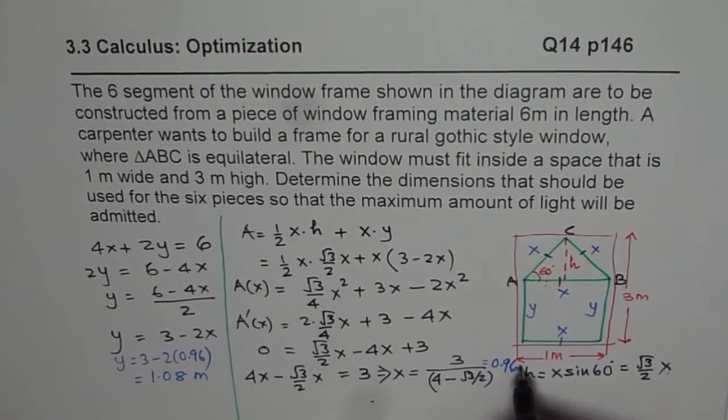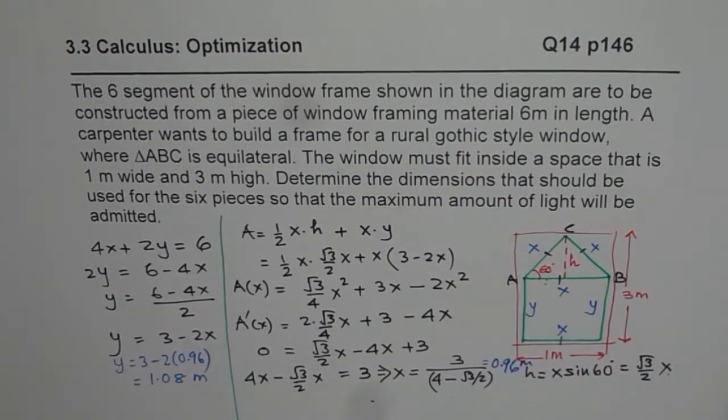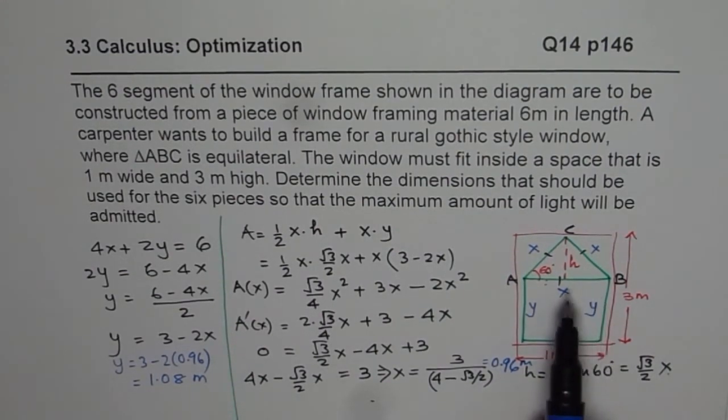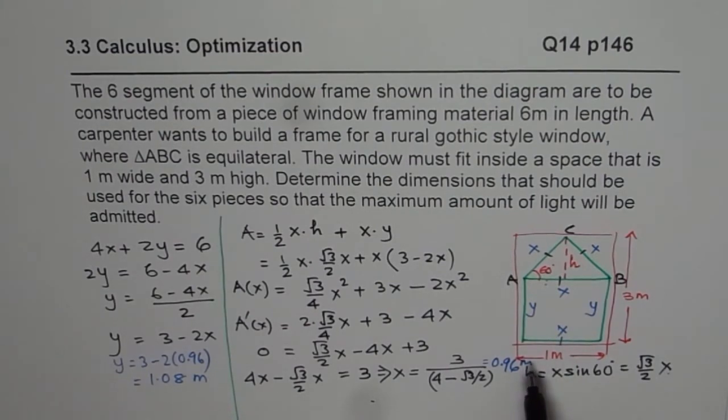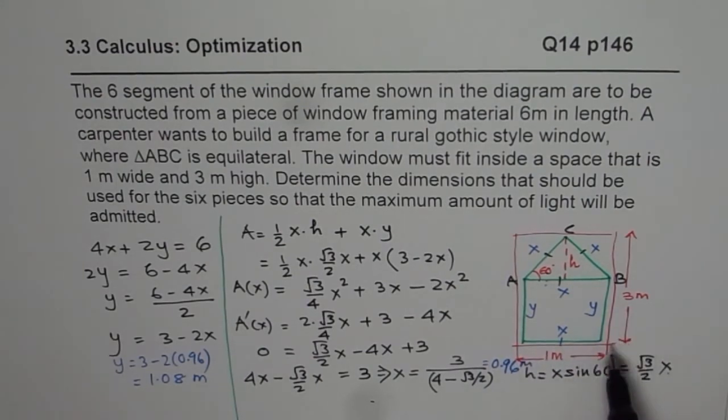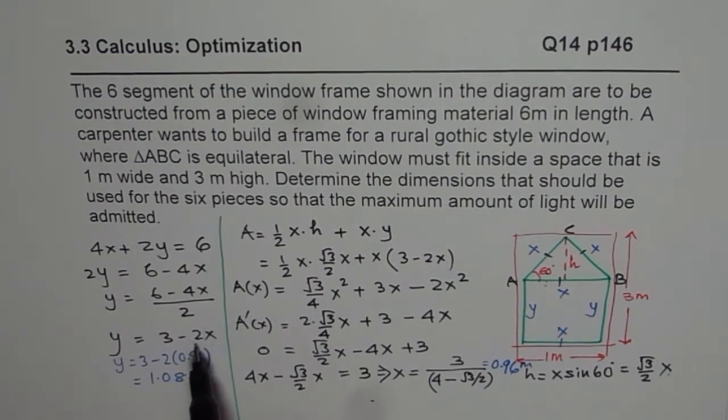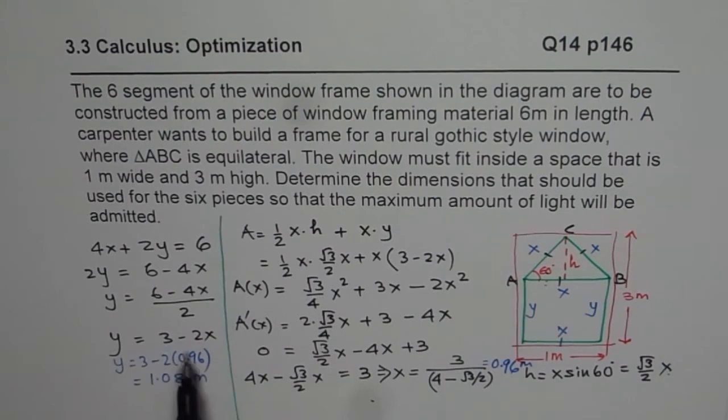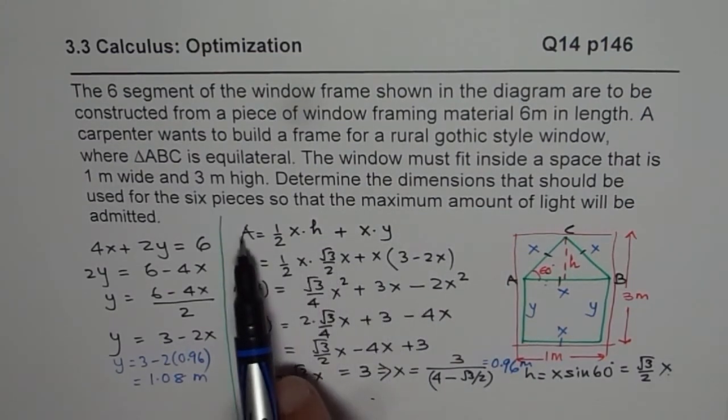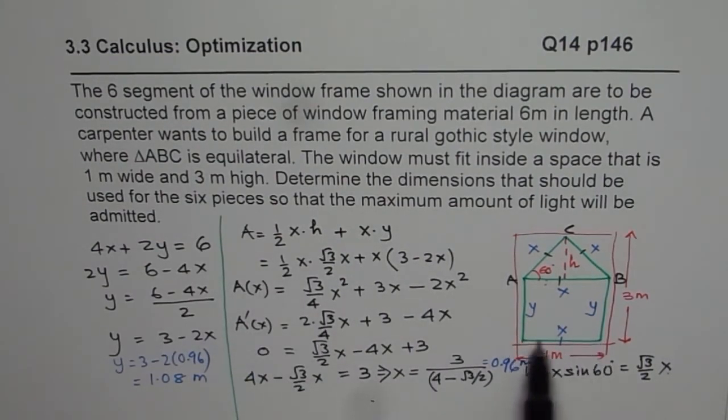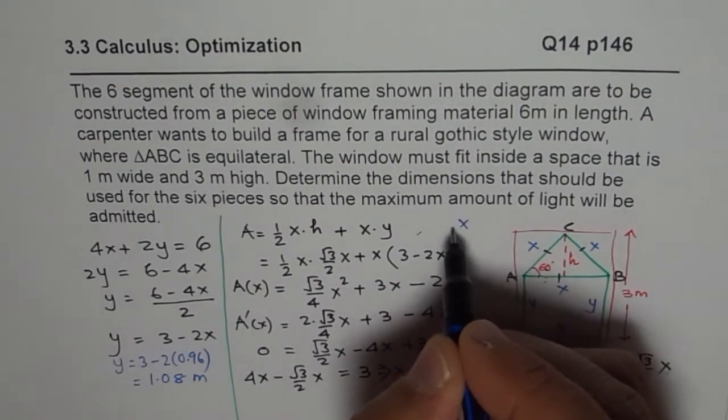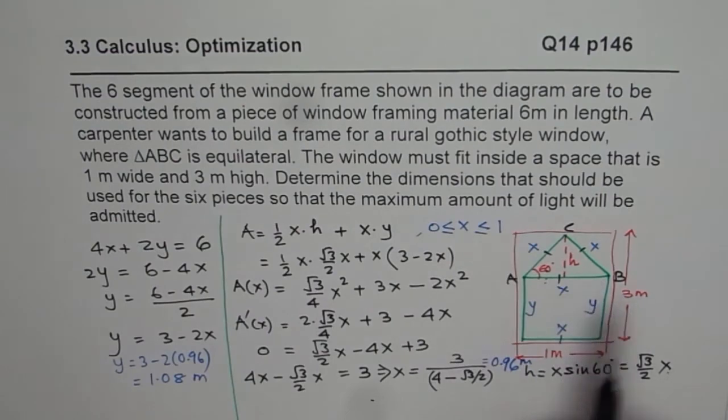And these are all in meters. So we get the dimensions as 1.08 meters for y and 0.96 meters for x for the maximum area. So that is how we could solve this question. Now, as you can see here, the limits for x are from 0 to 1. So you could put x as 0 to 1. If I substitute 1 here, I will get definitely a different answer, which will not be maximum.